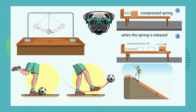Let's look at the soccer ball. What kind of energy does it have before it is kicked? And what kind of energy does it have after it has been kicked and is moving up into the air? Here the ball is stationary — it is not moving — so it has potential energy. And here it is moving, so it has kinetic energy.